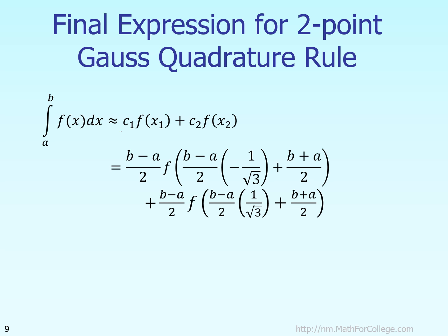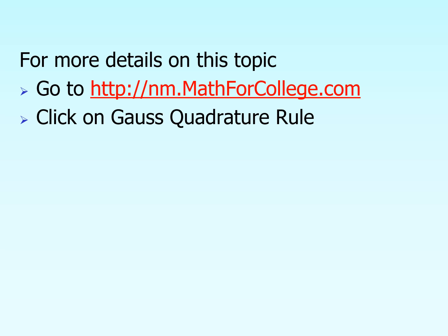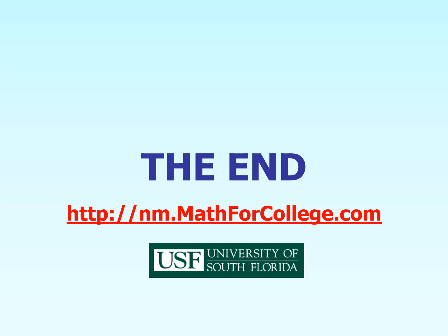Writing in compact form, we started with the formula and found C1, x1, C2, and x2. This gives the two-point Gaussian quadrature rule. Any third-order polynomial or lower integrated exactly with this formula gives the same result as exact integration. For any other function, you get an approximate value. The values of C1, x1, C2, and x2 are derived using the third-order polynomial, but the formula can be applied to any function.